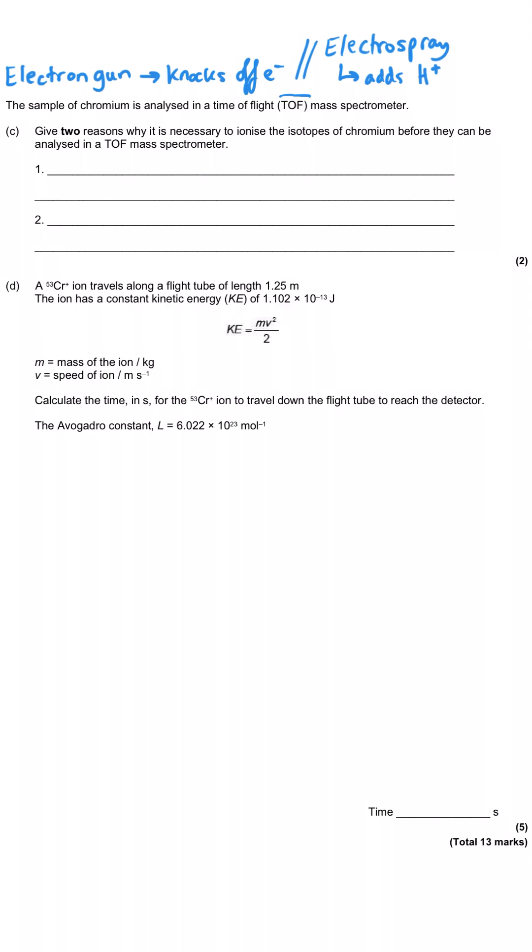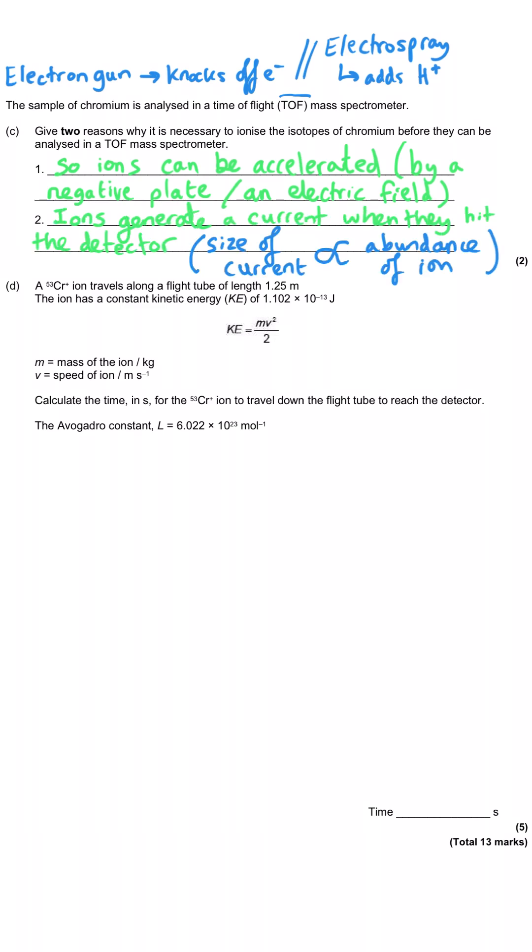So first of all, so the ions can be accelerated by a negatively charged plates or by an electric field - either is absolutely fine. And secondly, the ions when they hit the detector they generate an electric current, and the size of that electric current is proportional to the abundance of that particular ion that is being detected. So we need to say that the ions create a current when they hit the detector, and that's worth noting when you're writing the formula of something that has been detected, because if you don't put it as a positively charged ion then unfortunately you're going to be wrong because it just wouldn't get detected unless it was positively charged.